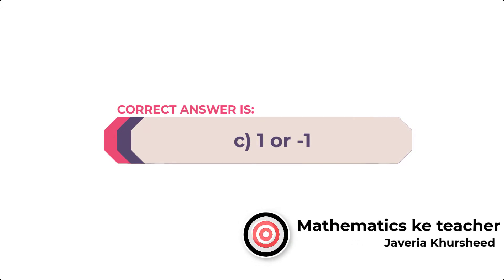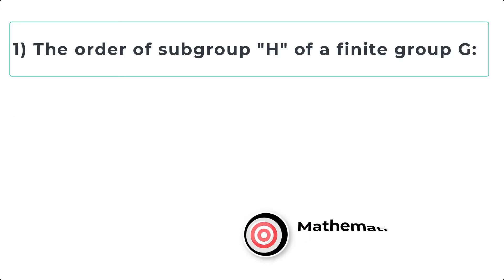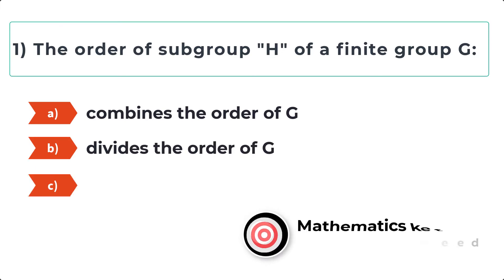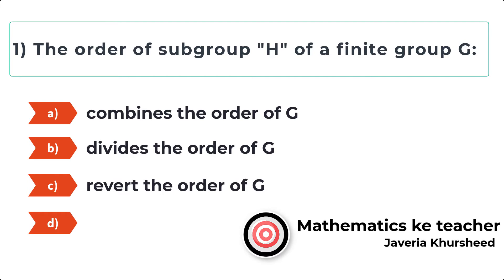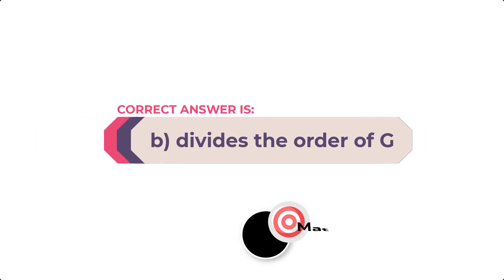Question 1: The order of subgroup H of a finite group G: A, Combines the order of G; B, Divides the order of G; C, Revert the order of G; D, None of these. Correct answer is B, Divides the order of G.